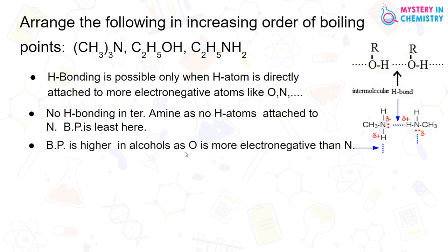Next, alcohols have higher boiling point as compared to amine because oxygen is more electronegative than nitrogen. So, boiling point will be stronger in alcohols as compared to amines. Everything is now clear. You can write the answer.